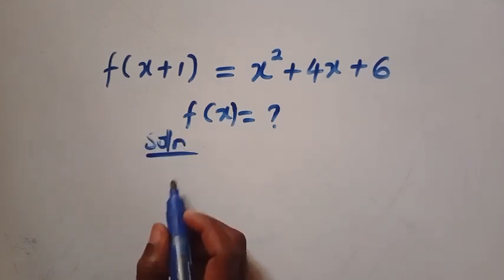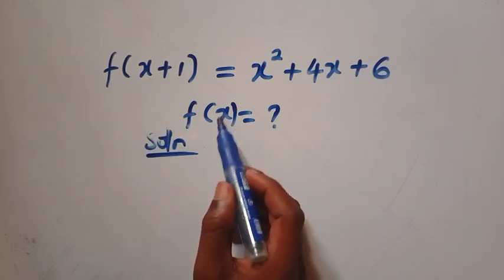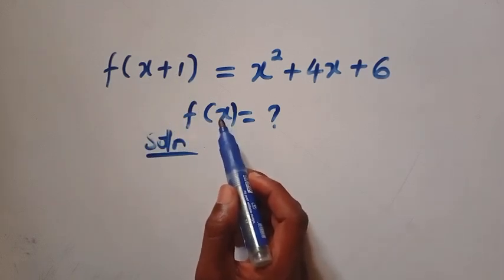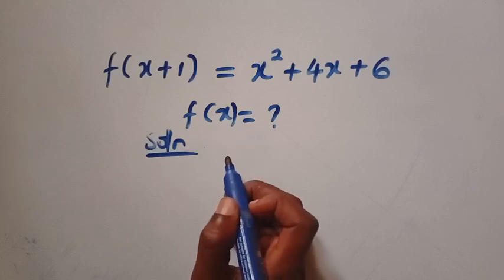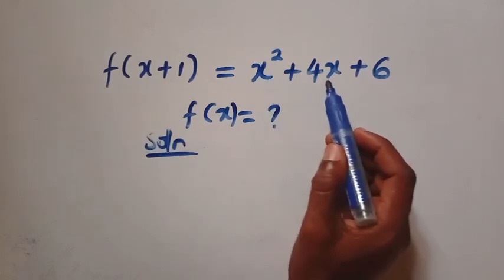We have a solution here. This function increases by 1, and we need to find only this f of x. x is a member of a real number, and at this side we have a quadratic x squared plus 4x plus 6.